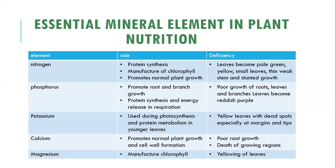The second mineral element is phosphorus. The roles of phosphorus in plant nutrition include promoting the growth of roots and branches. Phosphorus also enables protein synthesis and energy release during respiration. Deficiencies of phosphorus include poor growth of roots, leaves, and branches, and leaves turning reddish-purple.